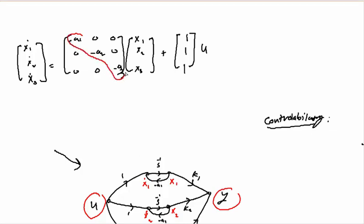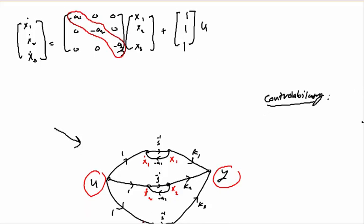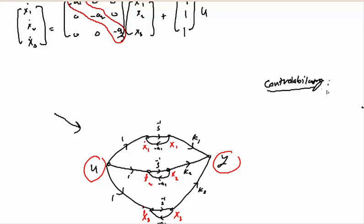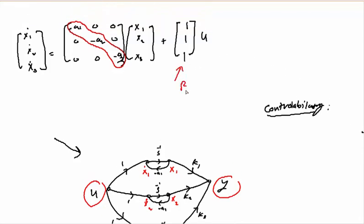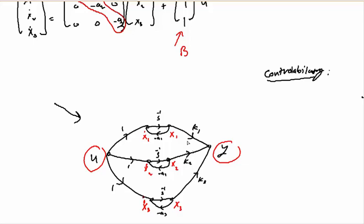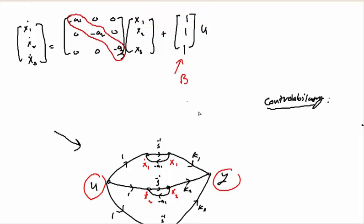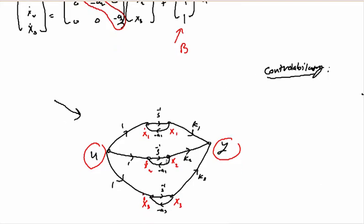As I said, controllability is the effect of input on all these states. If this B matrix has any element equal to zero, the system is not controllable. If all elements are non-zero — like 1, or any value not equal to zero — this means the system is controllable. So from inspection, we can say this system is controllable because all entries are 1. If any link is not existing, then it is not controllable.